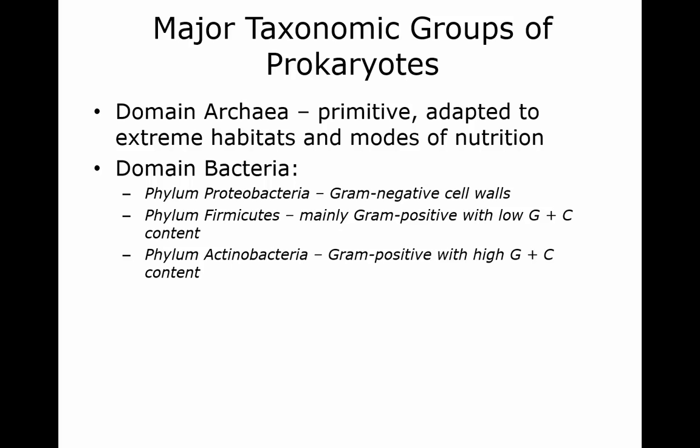In the domain Archaea, they're primitive and they are found in extreme environments, and they have different modes of nutrition. In domain Bacteria, we've got the phylum Proteobacteria with gram-negative cell walls, and then you've got the phylum Firmicutes that are mainly gram-positive, and Actinobacteria is the other phylum that's gram-positive.